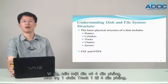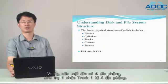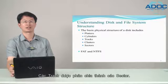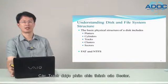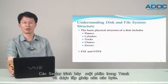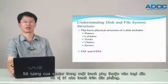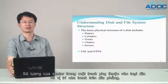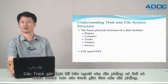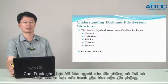Tracks that reside in the same locations on each platter form a cylinder. For example, if a disk has four platters, cylinder one consists of track one from all four platters. Platters are divided into sectors, and sectors represent a subsection within the track and are made up of individual bytes. Tracks closer to the outside of the platter can have more sectors than tracks near the center.